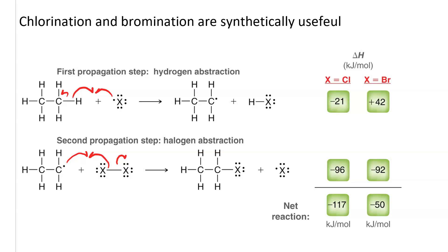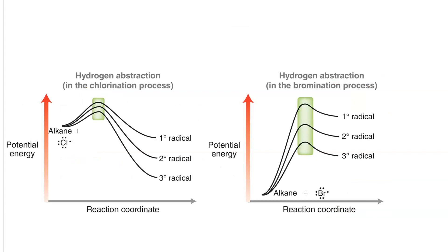In the net reaction, chlorination is more exothermic than bromination. Chlorination will happen faster than bromination, but bromination will be more selective. To explain the difference in selectivity, we need to invoke the Hammond postulate.